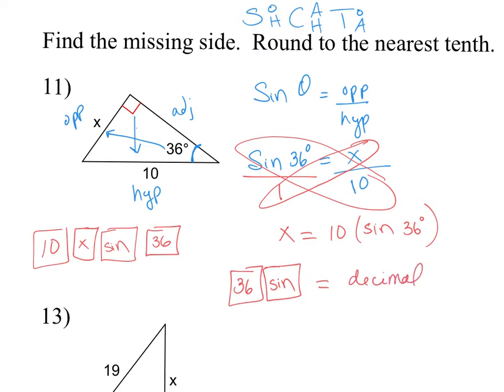And whatever decimal value that is, you're going to multiply that. So take that answer and multiply it times 10. The same thing would be as if you were using the trig table. You would go down the sine column until you got to 36 degrees to find out what the decimal value is. And the sine of 36 degrees at four decimal places is 0.5877.